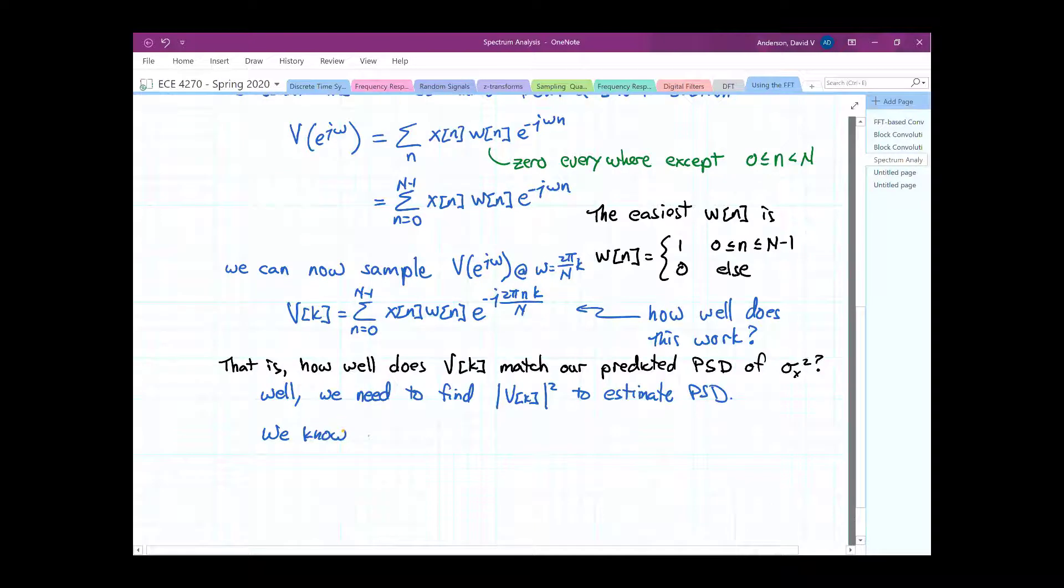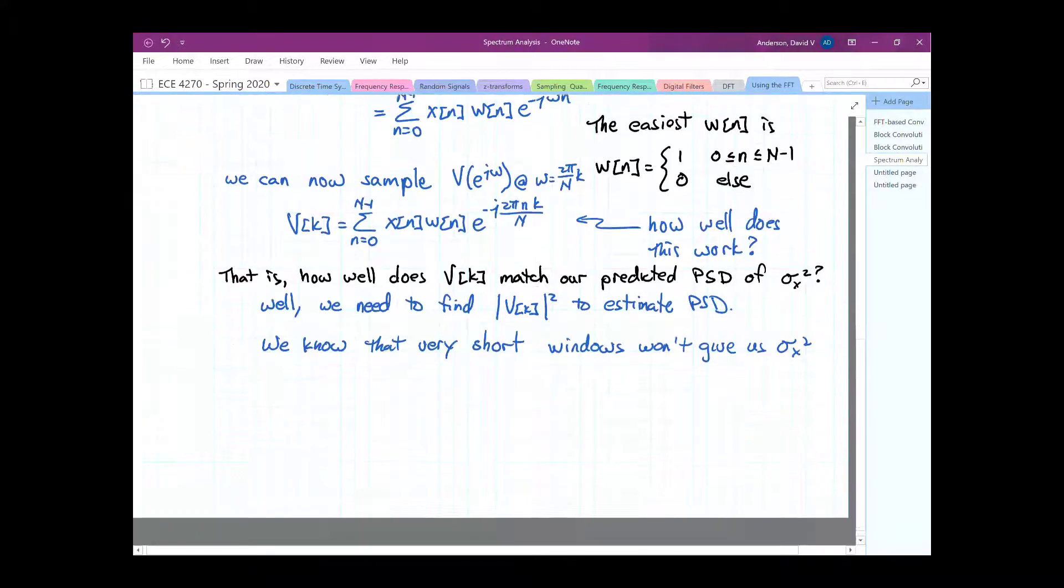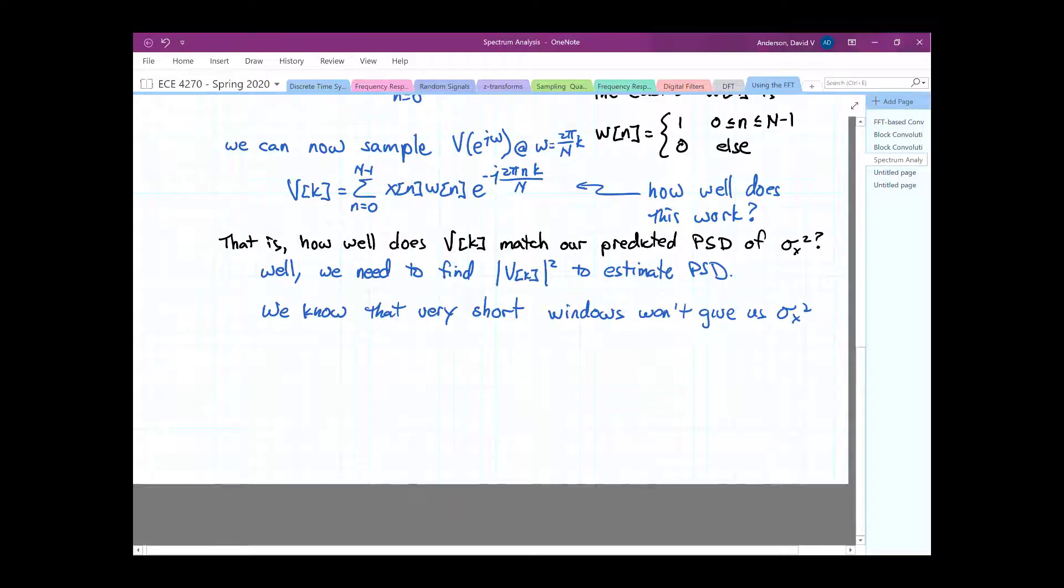So taking the Fourier transform of that one sample is not, even if we square it, it's not likely to give us sigma x squared. So if we took two samples, I don't know, it's not going to likely give us the same constant value. So just in this thought experiment, we can see that taking a single sample is going to fail miserably. Taking a few, there's nothing that guarantees it would give us some constant transform. But we're hoping that as we go longer and longer and longer, that it'll give us a better value. So that's our hope. Let's see. So we know that very short x, no windows, won't give us sigma x squared. So how long did it have to be?